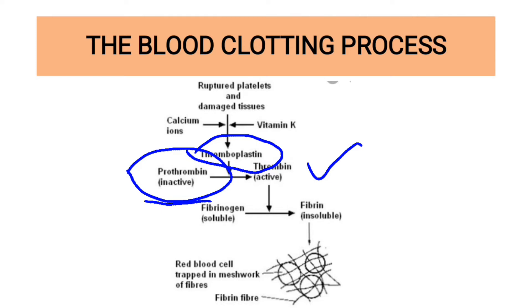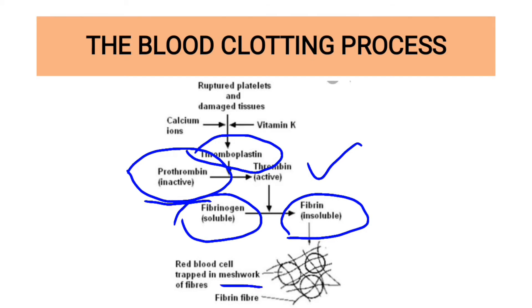Thrombin activates fibrinogen, which is in its soluble form, into fibrin. Once fibrin has been formed, it forms a soft meshwork on the wound, and that soft meshwork will end up trapping some red blood cells, hence forming a clot on the surface of the wound. That clot will prevent blood from oozing out of the body, and with time, that clot will dry up to form a scab.